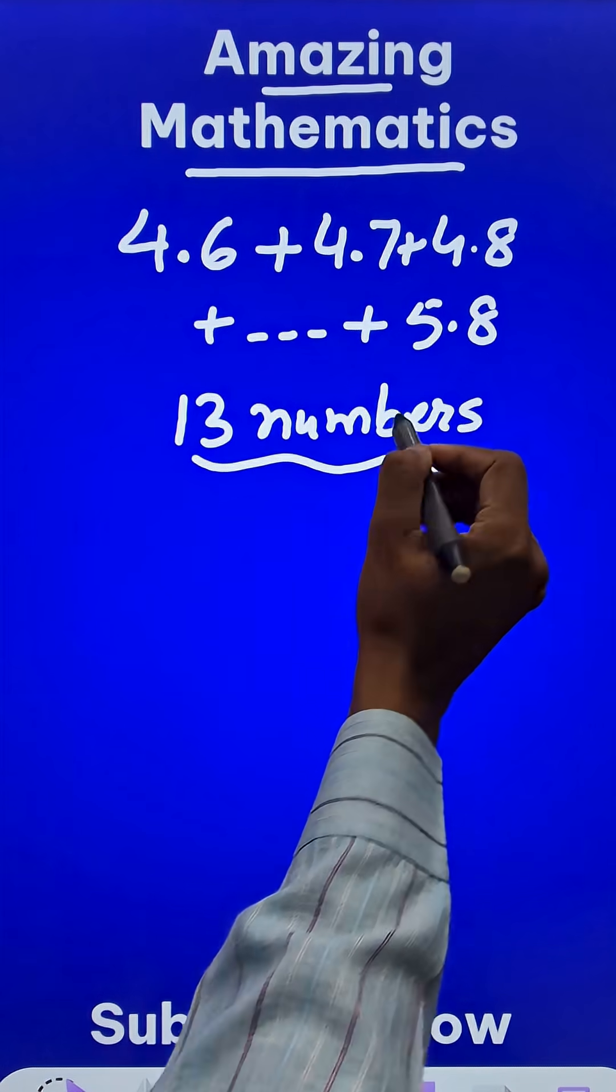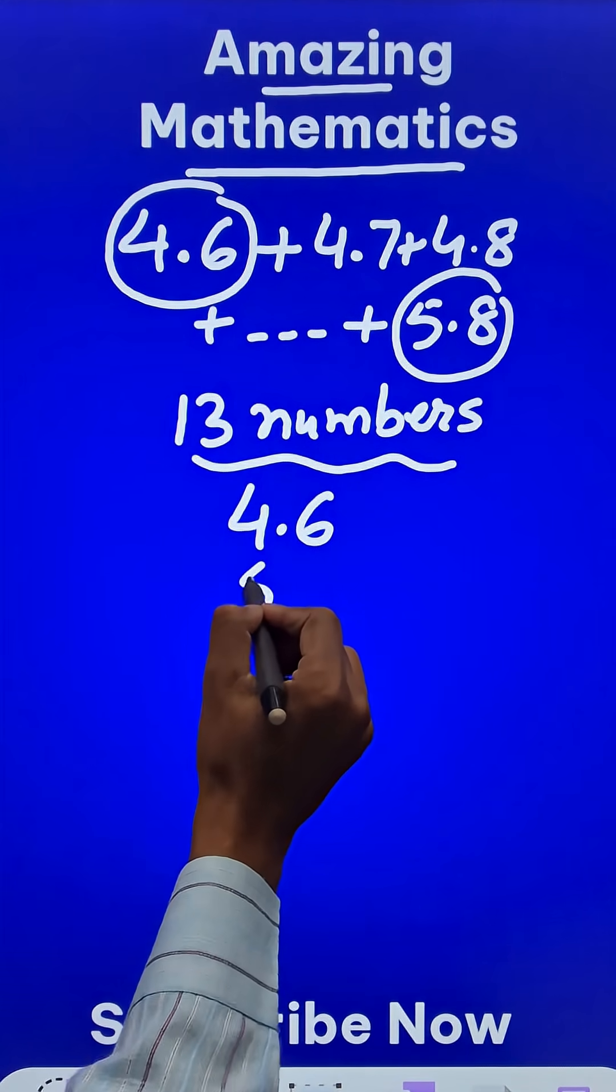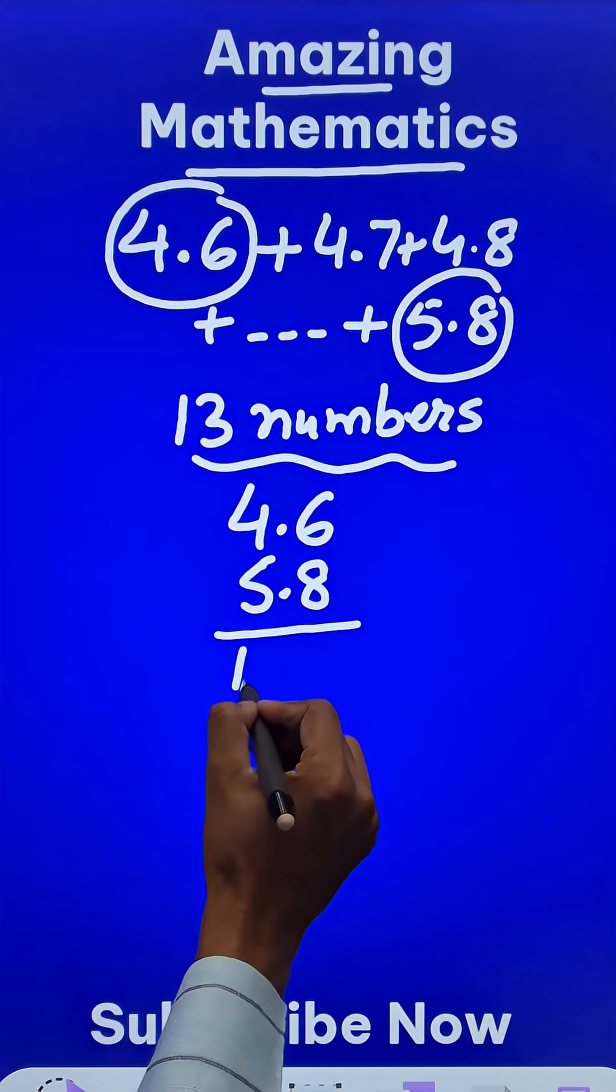Now instead of adding all of them separately, just add the first number 4.6 and the last number 5.8. So what do you get? You get 10.4.